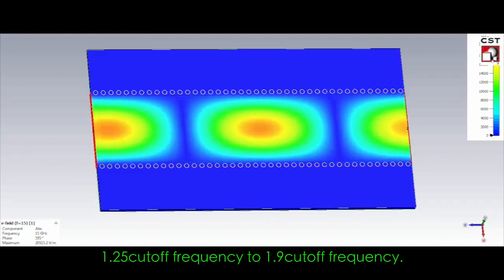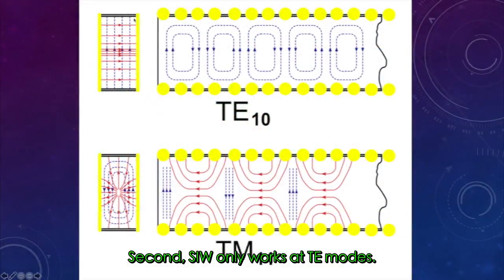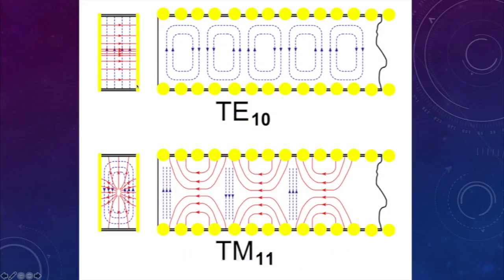Second, SIW only works in TE modes. This is structure-induced vulnerability. When it works at TE mode, the top and bottom copper layers can limit the E field, and the H field is limited by the copper layers and vias.